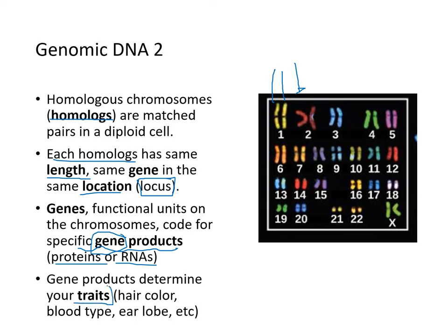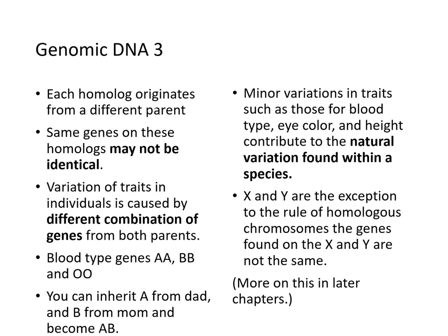Gene products determine traits like hair color, blood type, and earlobes. Each homolog originates from a different parent, and the same genes on homologs located in the same place may not be identical — that's where variability comes from. For example, with blood type genes, you can have A, B, or O. You could inherit A from dad and B from mom and become blood type AB, or inherit O from dad and B from mom and become blood type B.